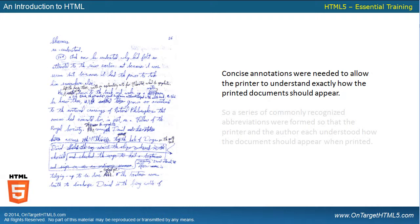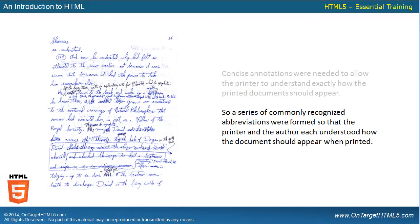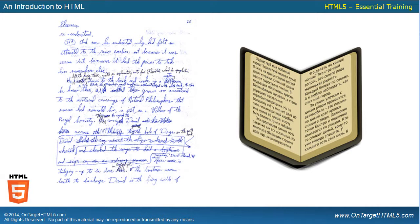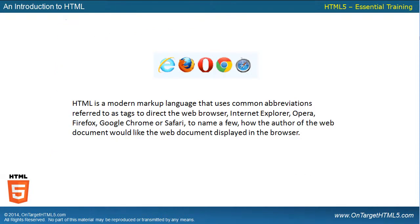We do a lot of the same things in a web browser. As we write up our HTML markup language, we're telling the browser how this should be displayed. A series of commonly recognized abbreviations were formed so that the printer and the author each understood how the document should appear when printed. We markup the document, and then we have the printed book — a text document based on how we've marked up our original script.